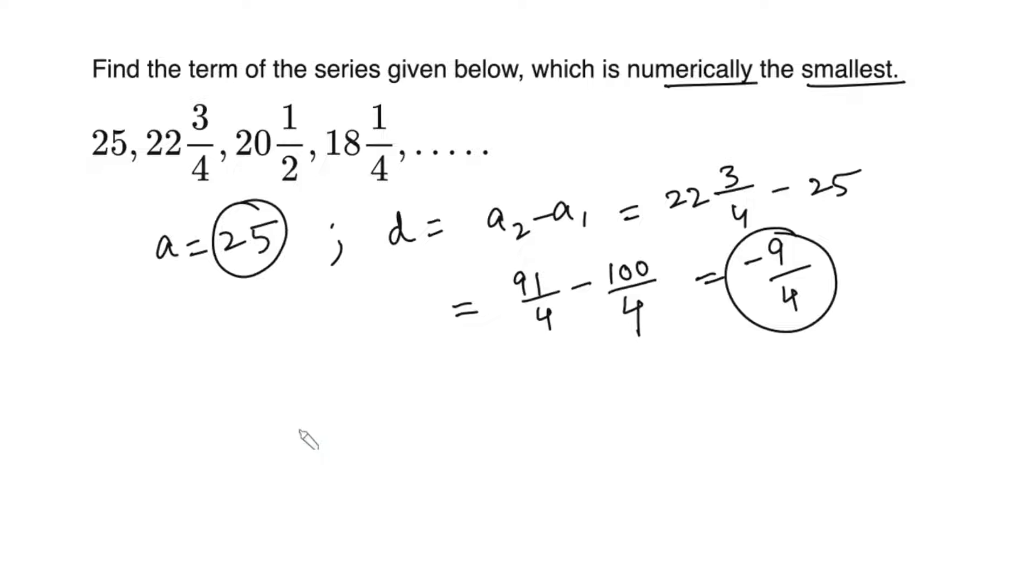In order to find that, what we can do is we can set up the nth term less than 0. So if we are able to find out which is the first negative term, the term before that will be the numerically smallest term.